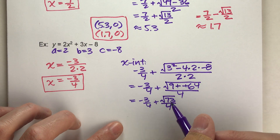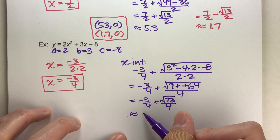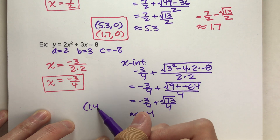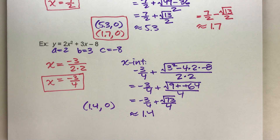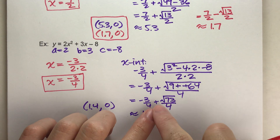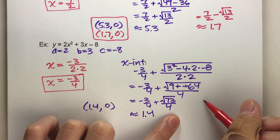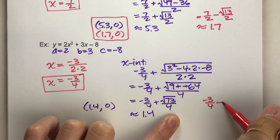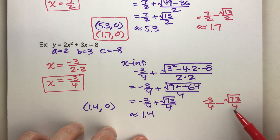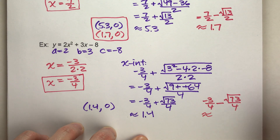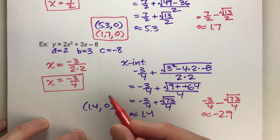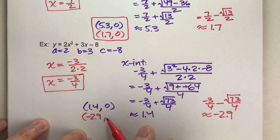For the other x-intercept, we use the same formula but subtract instead of add. So it's negative 3 fourths minus the square root of 73 over 4. Putting this in the calculator, we get about negative 2.9. So the second x-intercept is approximately negative 2.90.